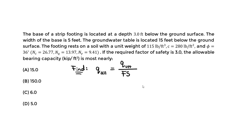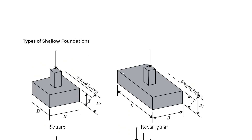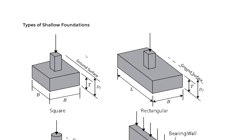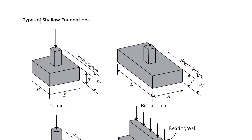Q_ultimate depends on the ultimate bearing capacity equation found on page 264 in the FE handbook 10.0.1. Before introducing the equation, let's quickly talk about types of shallow foundations to give a visual view of the different types — we're strictly focused on shallow foundations.